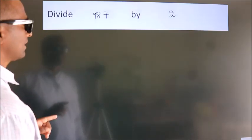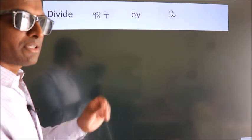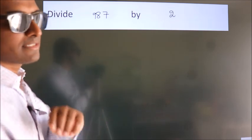Divide 987 by 2. To do this division, we should frame it in this way.